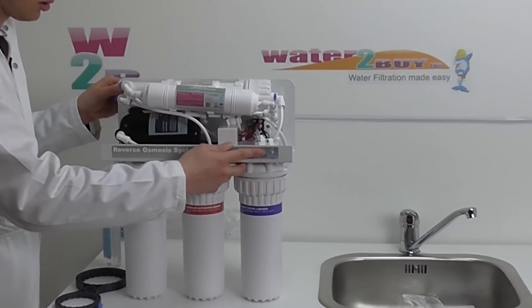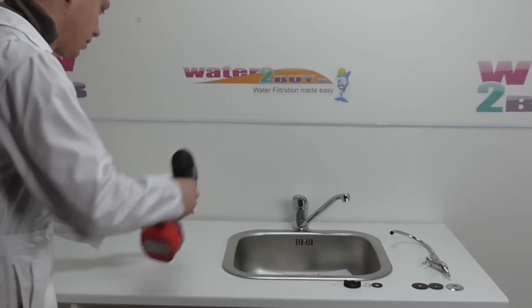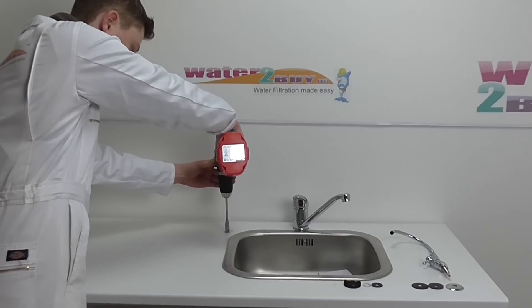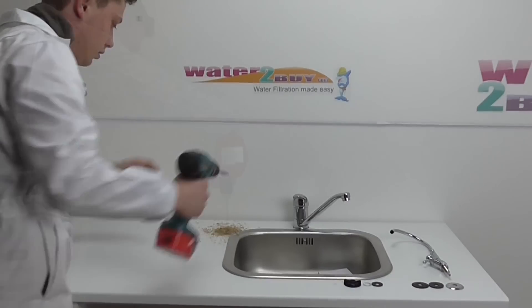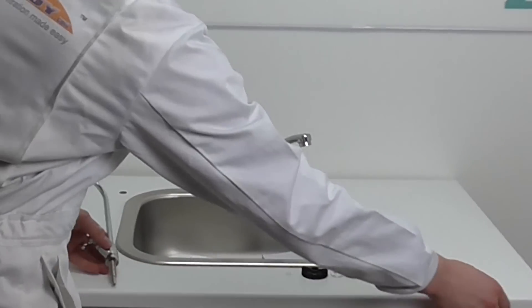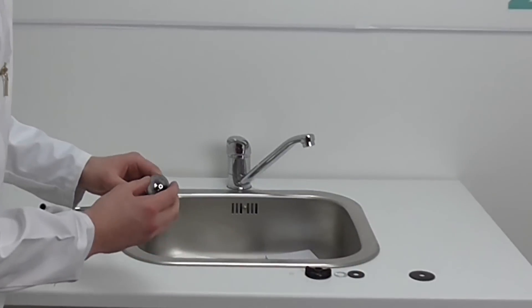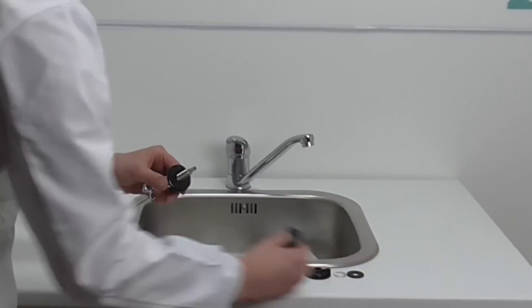Turn off your mains water before installing your reverse osmosis system. Drill a 12mm hole where you would like the tap to be positioned. Assemble the tap washers, chrome top, black plastic spacer and then the black rubber spacer.